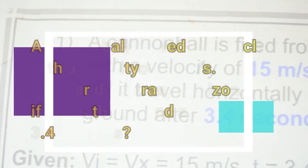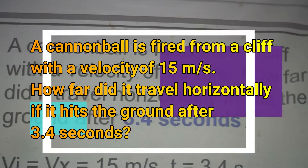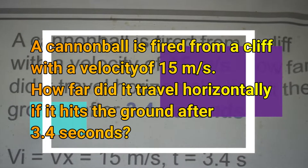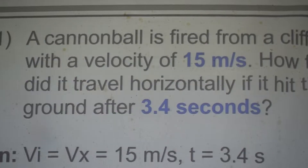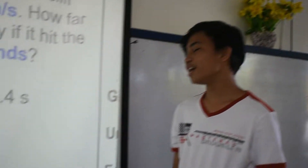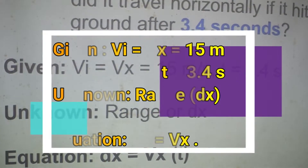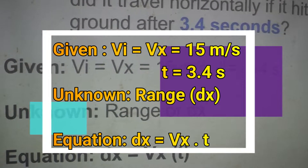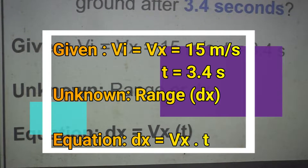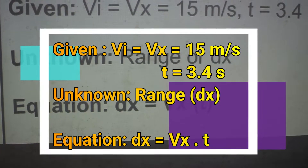Let us consider this problem. A cannonball is fired from a cliff with a velocity of 15 meters per second. How far did it travel horizontally to hit the ground after 3.4 seconds? Our given is vx equals 15 meters per second, and time is 3.4 seconds. We are asked to solve for range or dx, and our equation is dx equals vx times time.